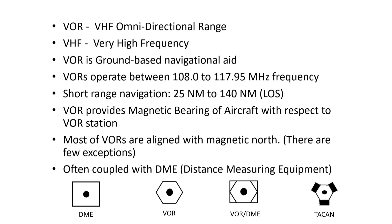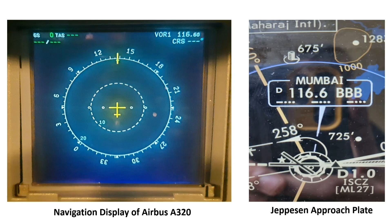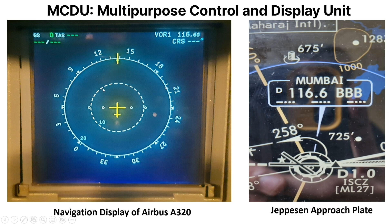This symbol represents a station having VOR and DME coupled together. This is the symbol for TACAN — tactical air navigation. On the left you can see the navigation display of an Airbus A320. On the right you can see the Jeppesen approach plate, from which you get information about VOR stations. For example, this is the Mumbai VOR with a frequency of 116.6 MHz, and this is the identifier. This is the MCDU. To use this Mumbai VOR for navigation, you first select VOR mode and enter frequency 116.6 into the radio nav page of the MCDU, and then you get your VOR information.